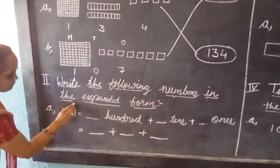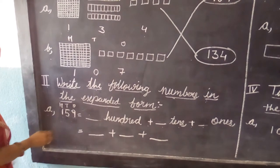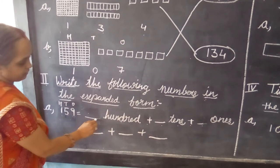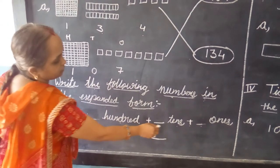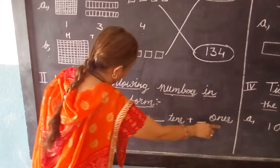I mean like here, 1 stands in 100 place. Now read this sentence: 159 equals dash hundred plus dash tens plus dash ones.